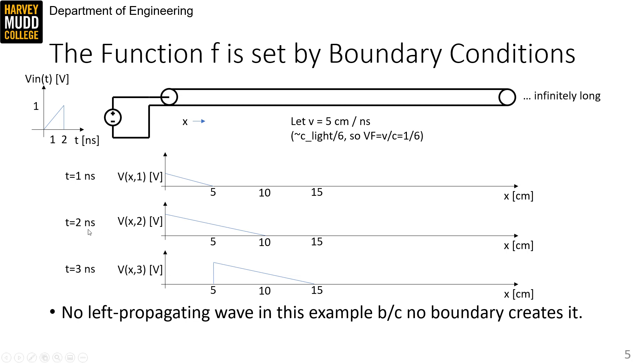This continues until the falling edge at t equals two nanoseconds. And then the voltages on the transmission line will just keep propagating to the right forever, like in t equals three nanoseconds. So the shape of v of x t was determined by our boundary condition v in of t enforced on x equals zero. So this shape is like the f of x t in the general math problem. And as a final note, this solution only has a right propagating wave because we don't have any boundary condition that creates a left propagating wave in this example.